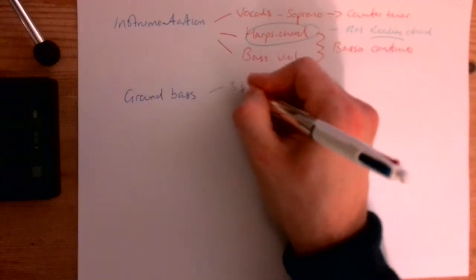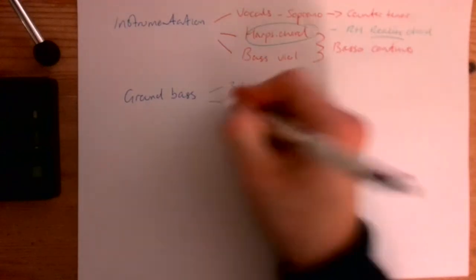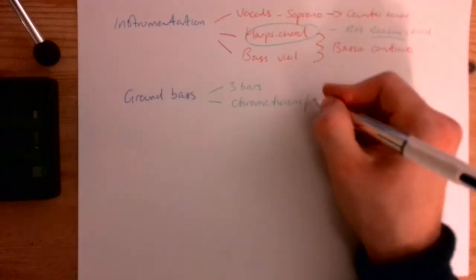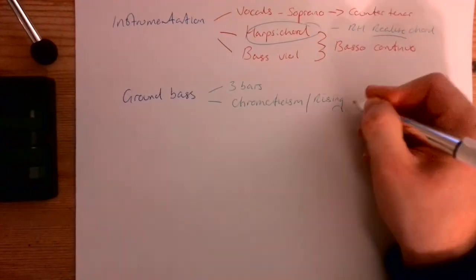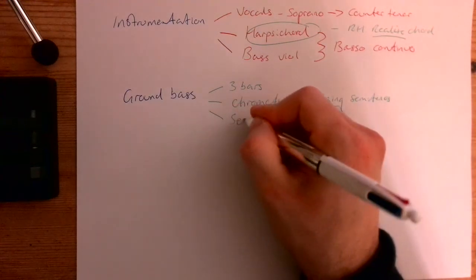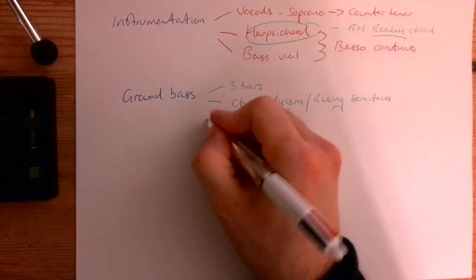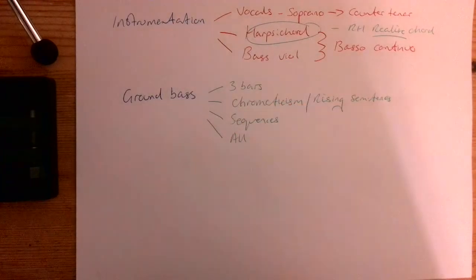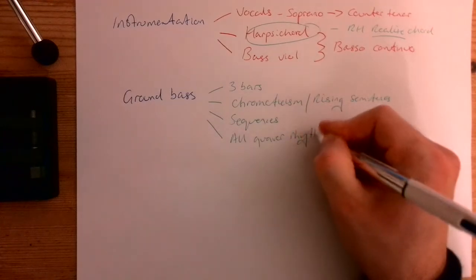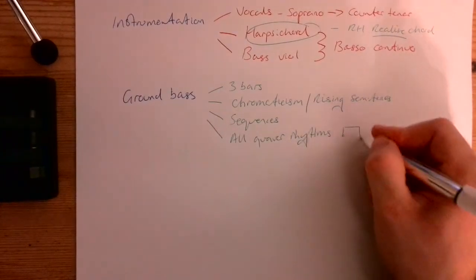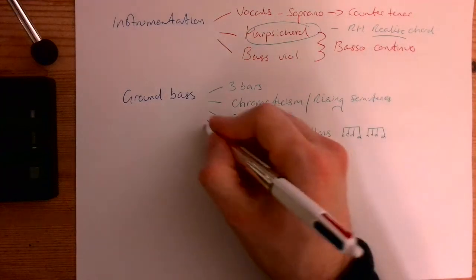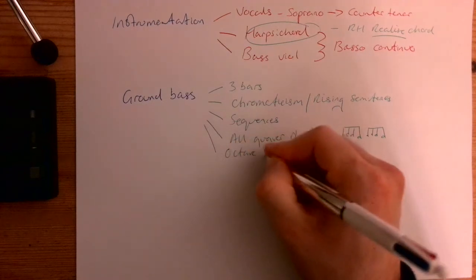So the first one is that it is three bars long. It has a lot of chromaticism from the rising semitones that it has throughout it. It is made using sequences, which is when you have a melody line and then you repeat it higher or lower, but by the same intervals. It has all quaver rhythms, so a bunch of these. Eight, actually. And then you have an octave jump at the end.